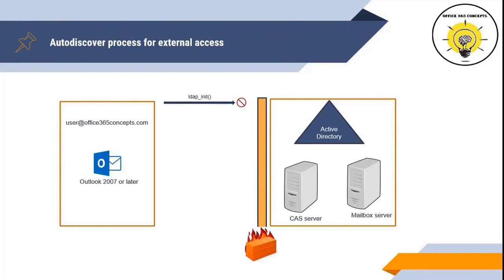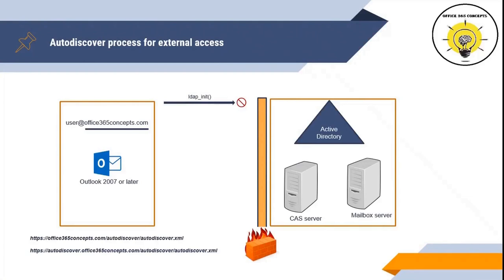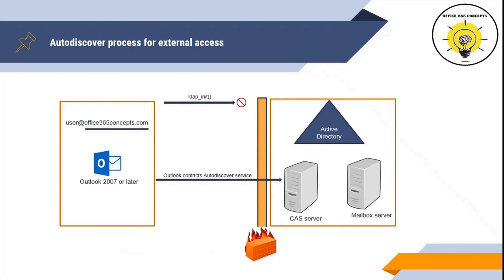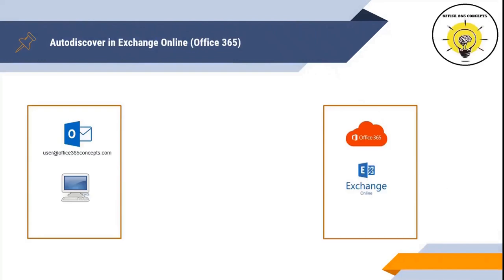For example, if the user's email address is user@office365concepts.com, Outlook will extract office365concepts.com and reach DNS using predefined URLs. For Outlook to locate the Autodiscover service via DNS, there must be a host record in DNS that maps the public IP address of the CAS server where Autodiscover is hosted. Outlook then contacts the Autodiscover service, which returns URLs and connection settings for Exchange services, and Outlook connects to Exchange.